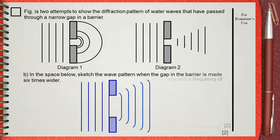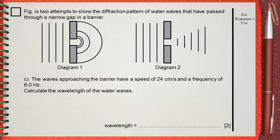Question c: The waves approaching the barrier have a speed of 24 centimeters per second and a frequency of 6.0 Hertz. Calculate the wavelength of the water waves.